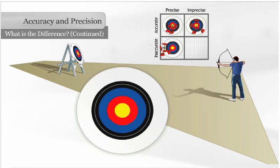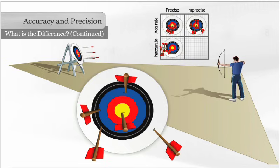If our archer is having a really bad day, he might even be inaccurate and imprecise. In this case, his arrows will strike the target in a random pattern, and he will not hit the same part of the target time after time.